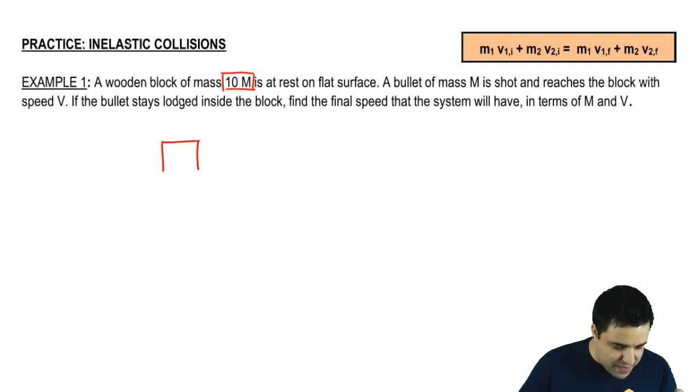So I have a wooden box. It doesn't matter that it's wooden. Mass 10m at rest on a flat surface. So the initial velocity of this object here is zero.